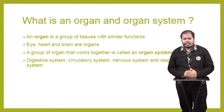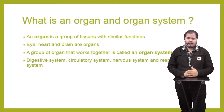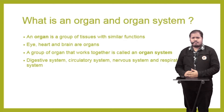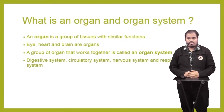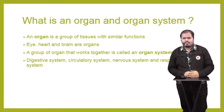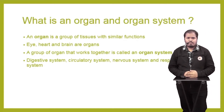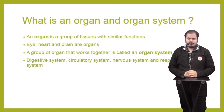A group of organs that work together is called an organ system. Examples of organ systems are the digestive system, circulatory system, nervous system, and respiratory system. In the following slides, we are going to see what types of systems these are and how they function in our body.